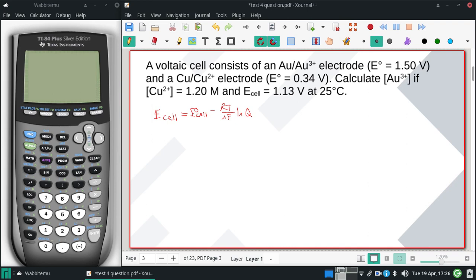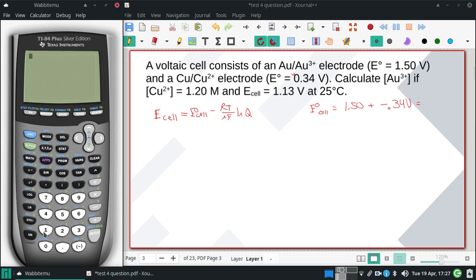So I'm looking here, and my smaller value is what I'm going to turn into my anode. So my E° of the cell is going to be that 1.50, and then we'll add the inverse sign, so 0.34. So 1.50 minus 0.34 gives me 1.16 volts, and I'm going to write this next part out.